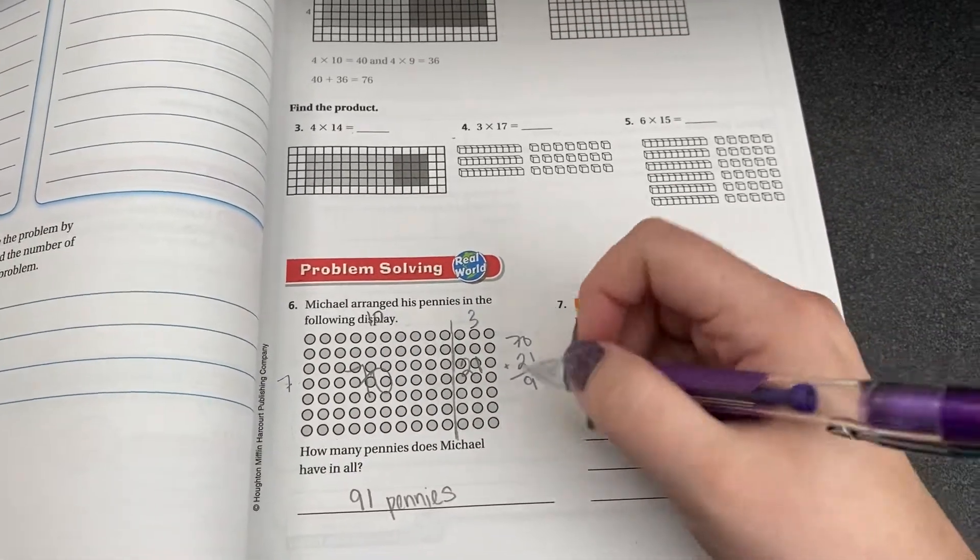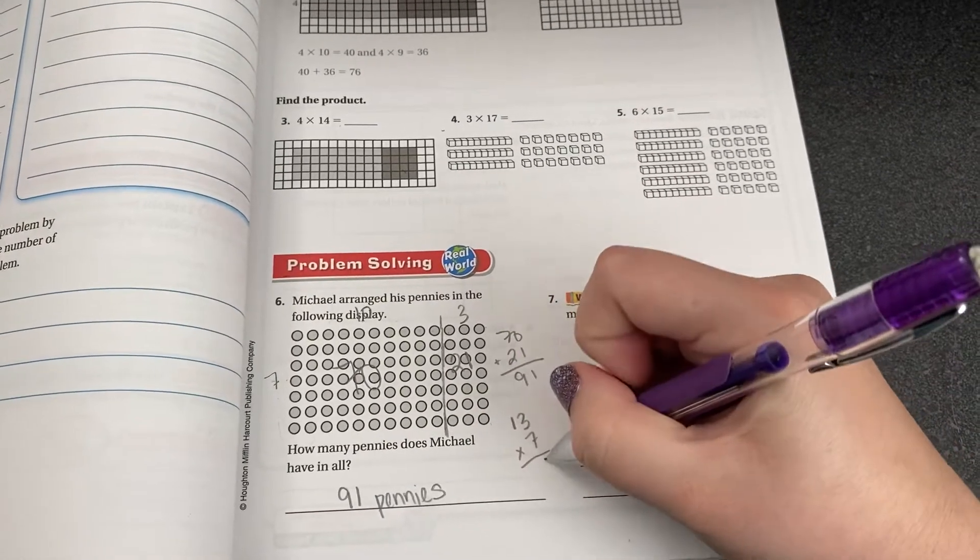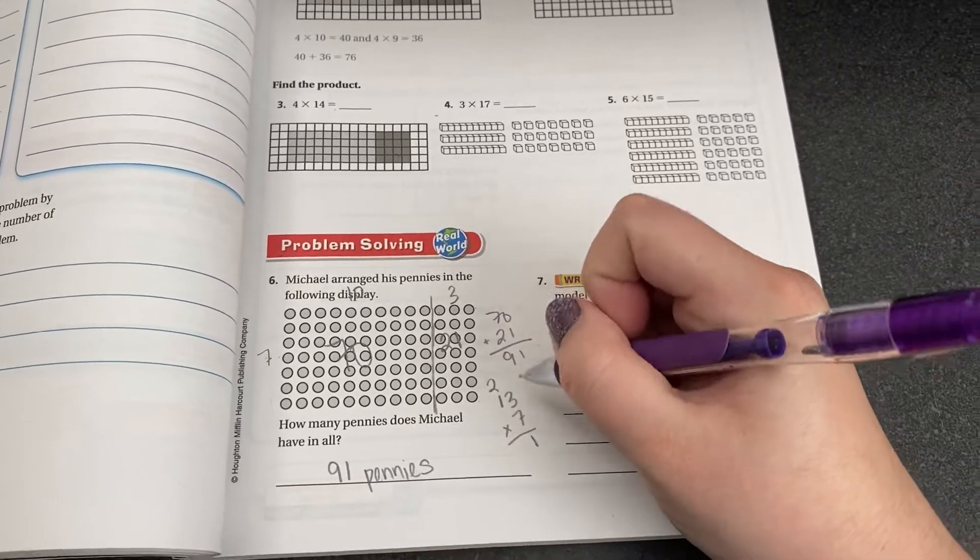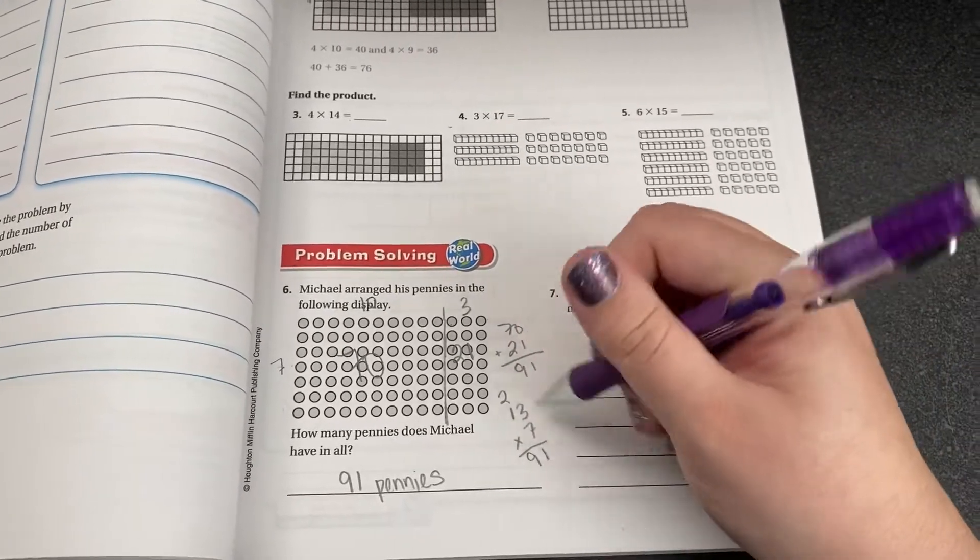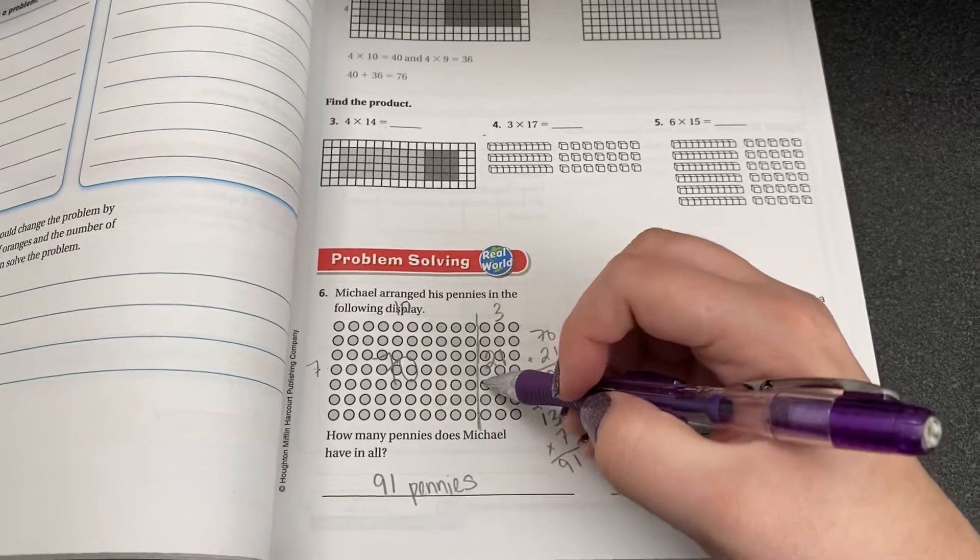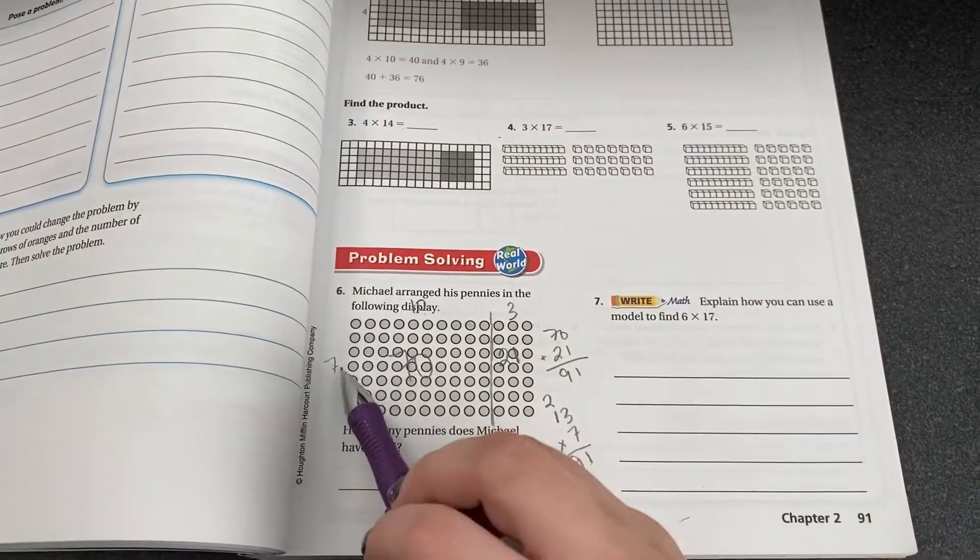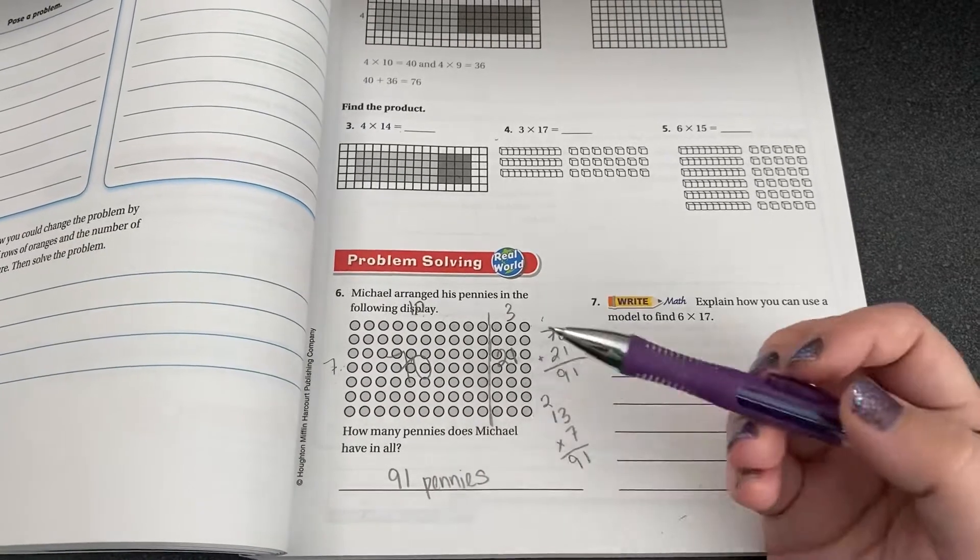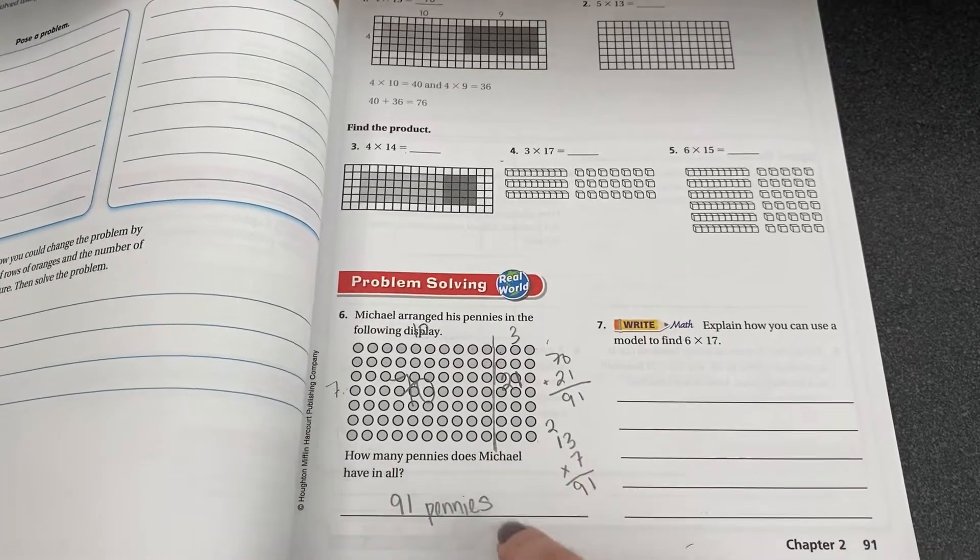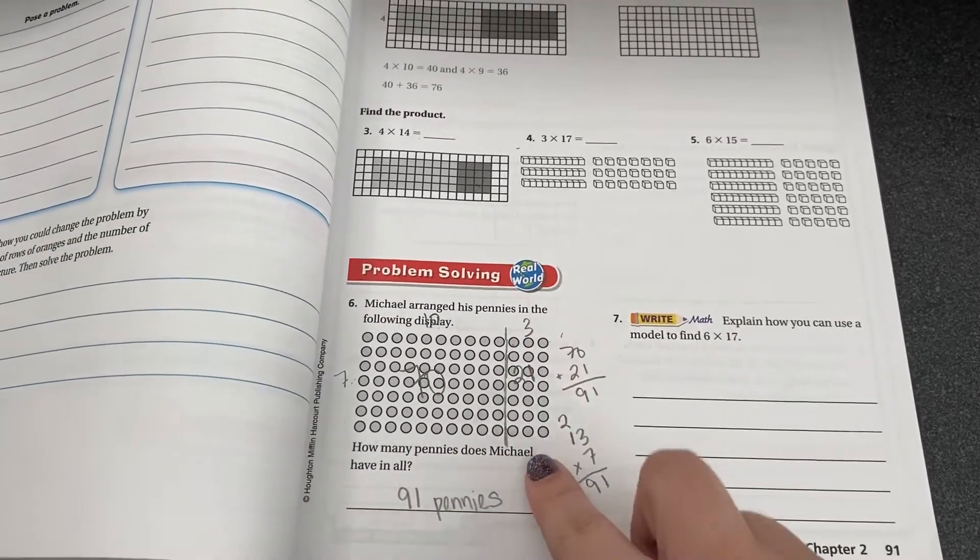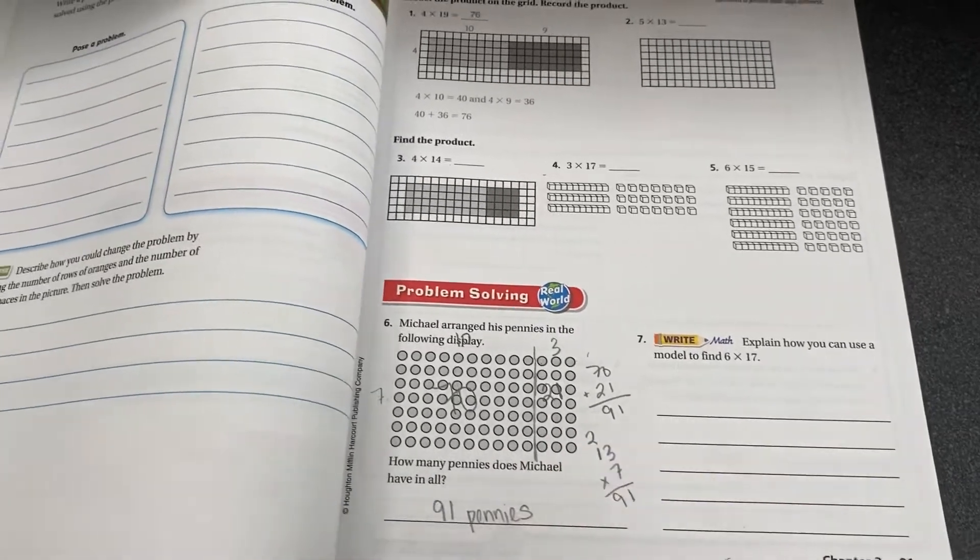And now if I did thirteen times seven, we'll learn how to do this in a couple weeks. I get the same answer. But you can do this pretty easy because you can find seven times ten and seven times three on your chart if you're not sure. This is what we're doing this week based off of this array. We're taking the idea of an array and using it with bigger numbers than you used last year.